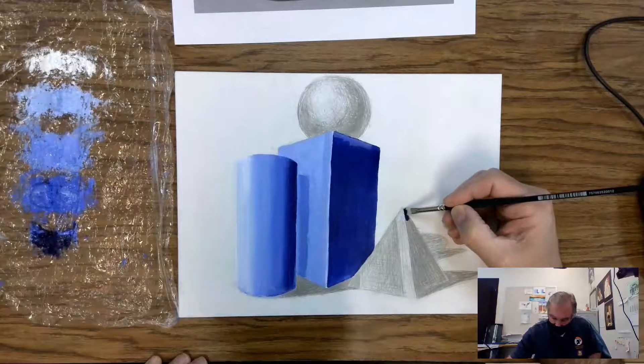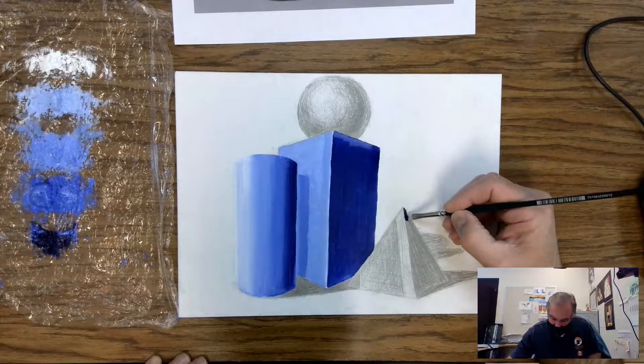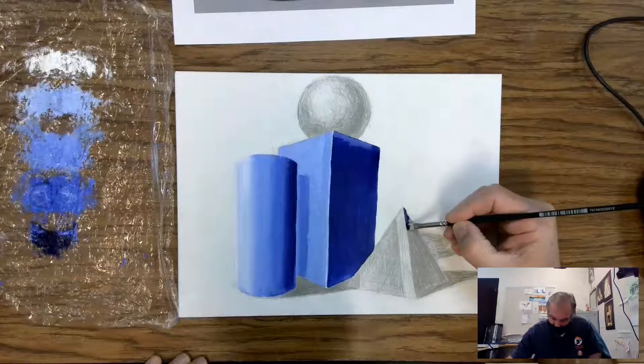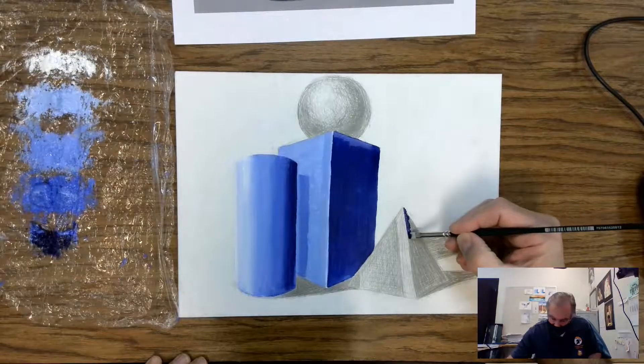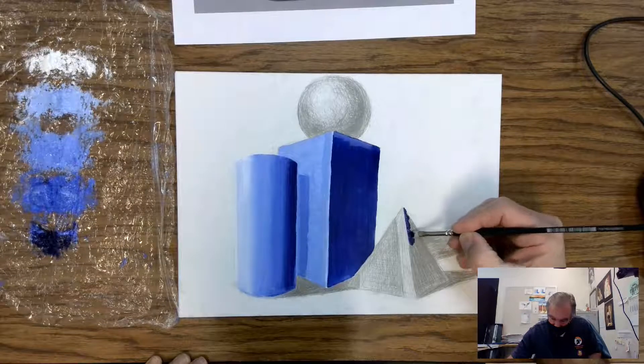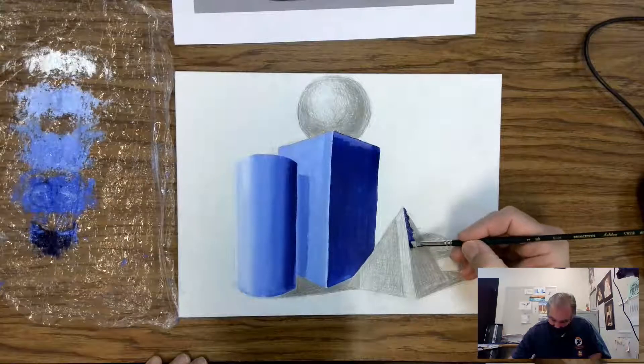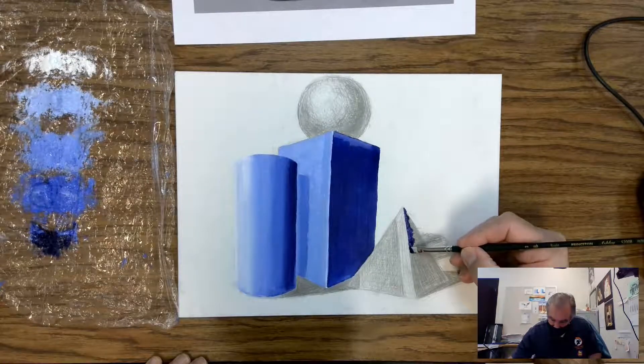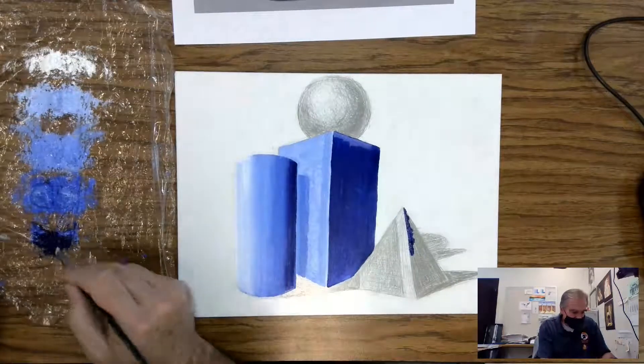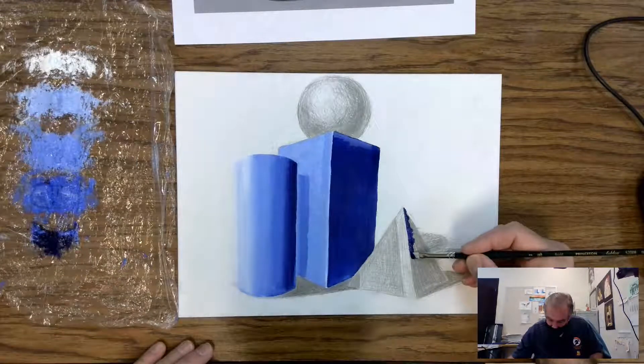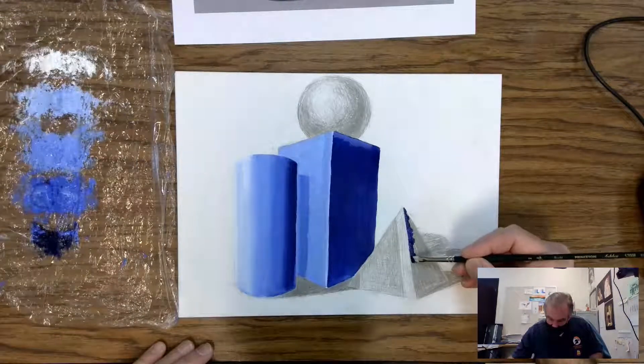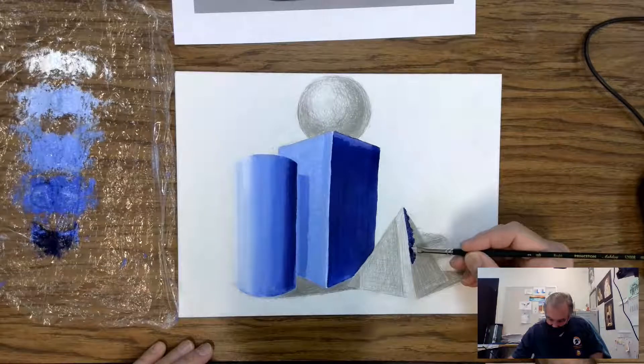Here we go, gonna just start dabbing in and forming up the edge between the two values. Like I said, this area back here is mostly this darker blue. This is my zero percent light, and it's going to be darkest right along the edge here.